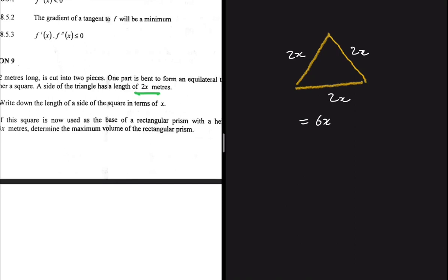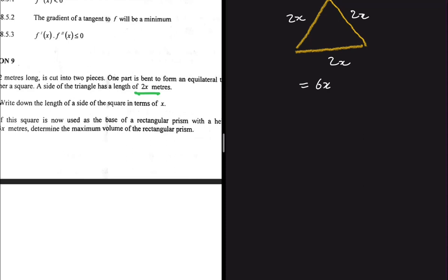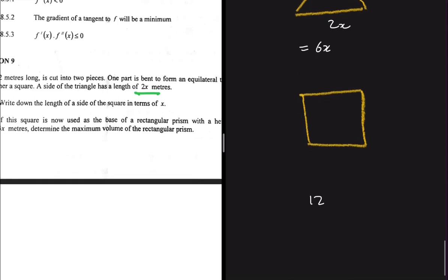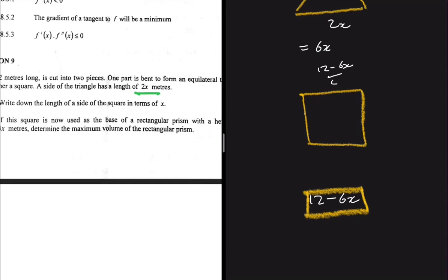From the remaining piece of wire, a square is formed. From the 12 meters, we have already used 6x meters, so the wire remaining is 12 minus 6x. This is the amount used to construct the square. Therefore, each side of the square will be (12 − 6x) divided by 4, and adding all four sides gives 12 − 6x.